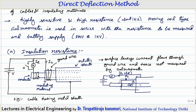That is the basic principle. We provide the guard ring connection so that only the current passing from the conductor to the sheath is measured. Whichever current is leaking through the surface — that leakage current is bypassed through the guard ring, passes through the surface over the metal sheath, and will not be measured by the galvanometer. Through the galvanometer, only the current passing from the conductor through the insulation is measured. That is why the guard ring is used in practice.